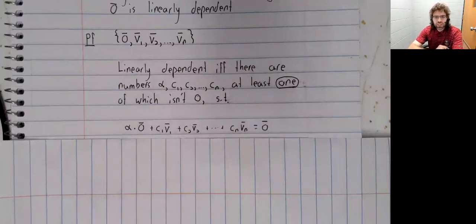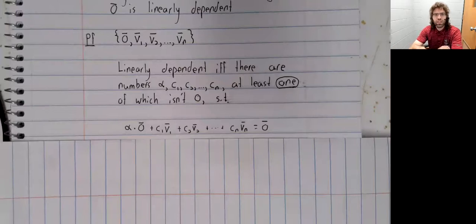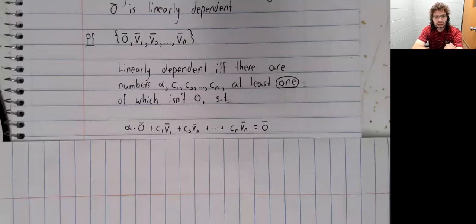That is to say, in order to be linearly dependent, there has to be a non-trivial combination of these vectors that equals the zero vector.